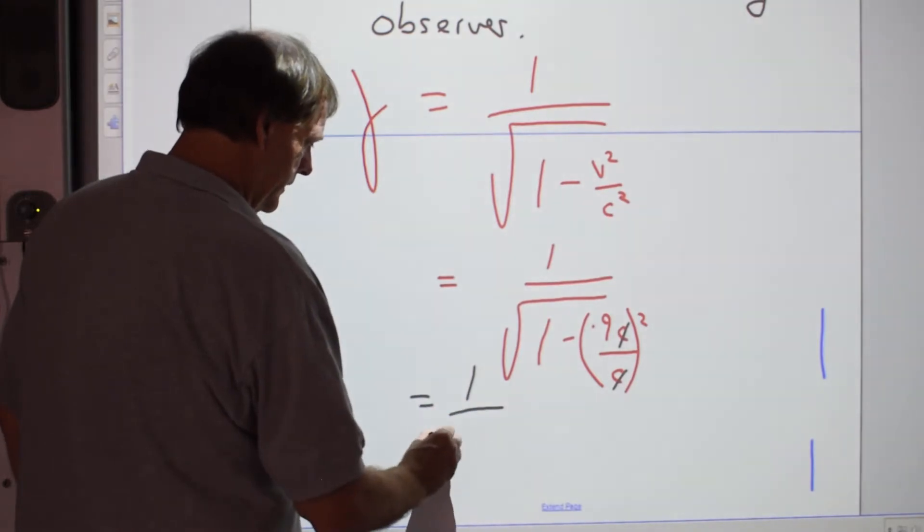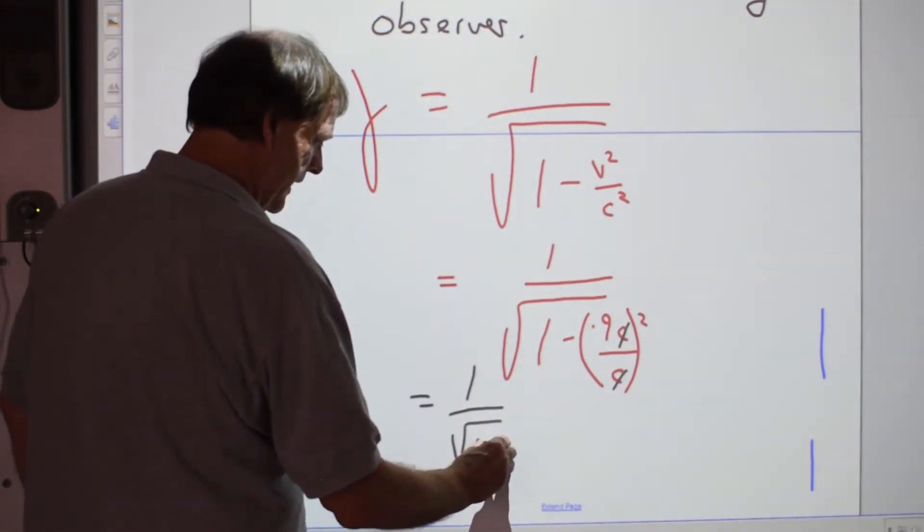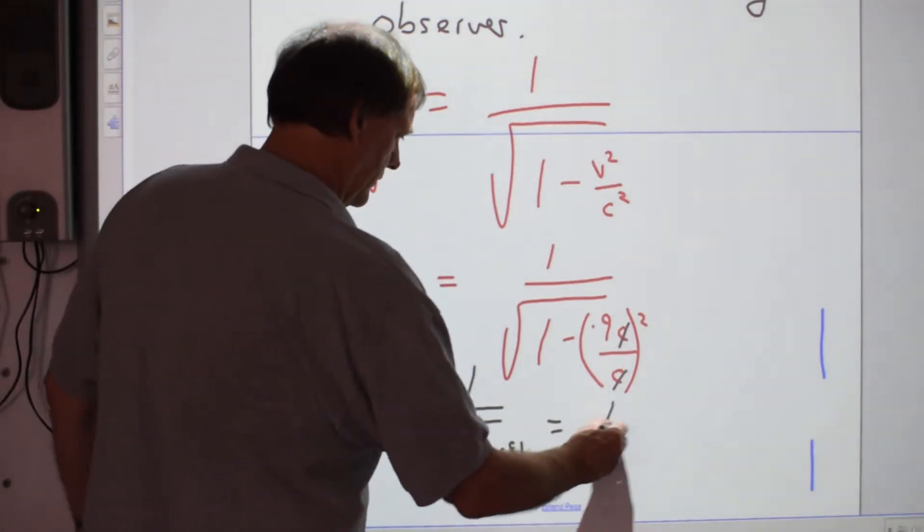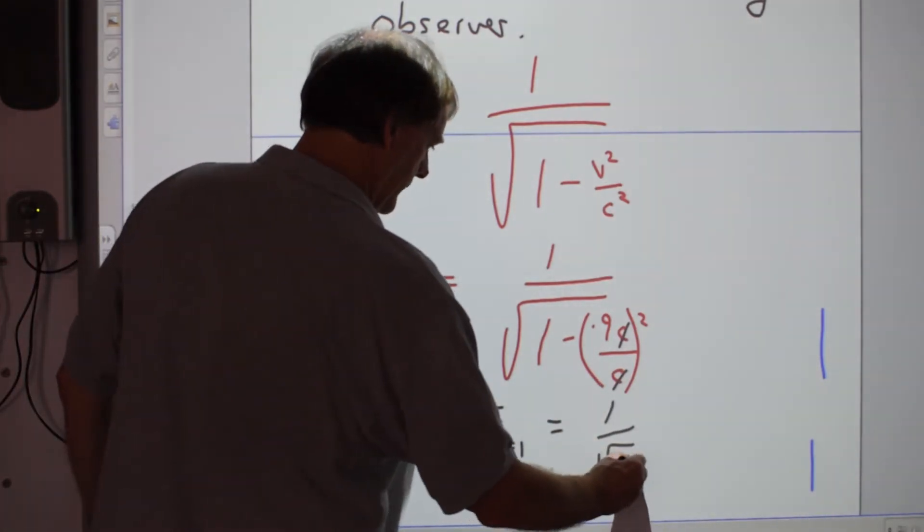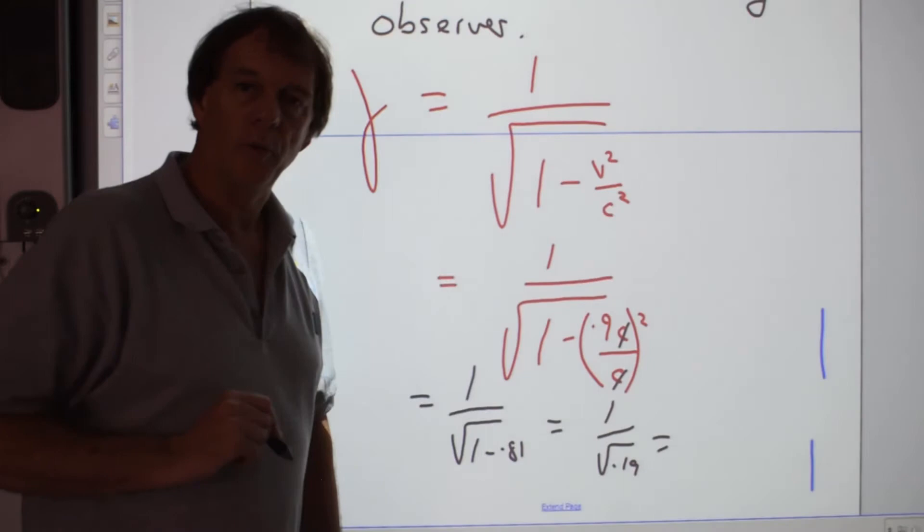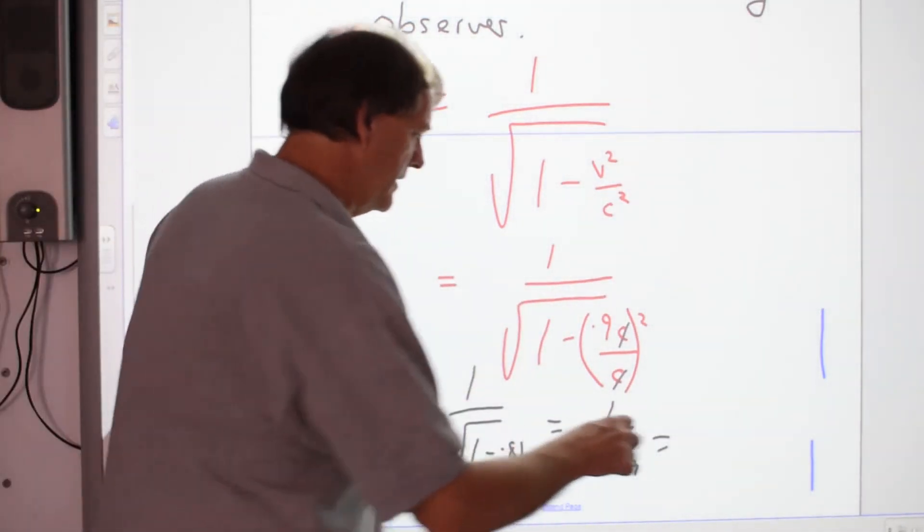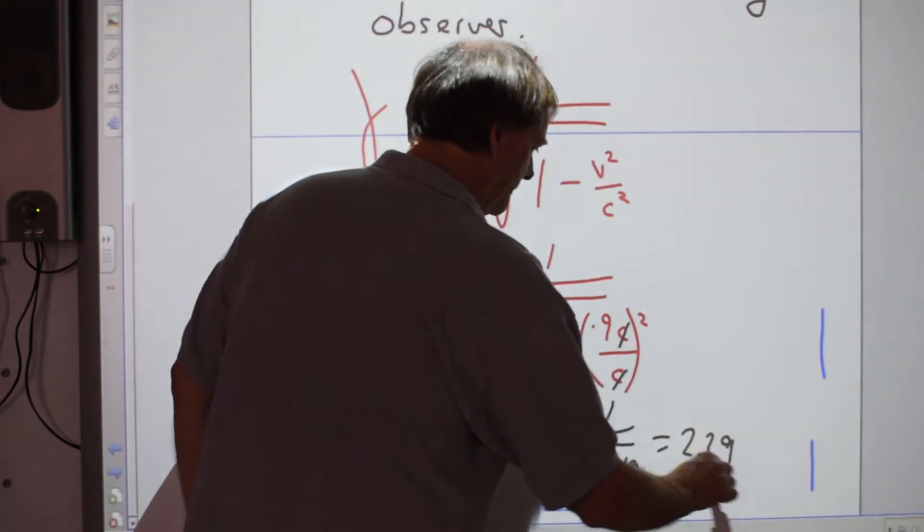You've got 1 subtract 0.9 squared. 0.9 squared is 0.81. What's 1 take 0.81? It's 0.19. So you want to do 1 over the square root of 0.19 in your calculator there. You can do the whole thing in your calculator. And what you're going to get there is 2.29.